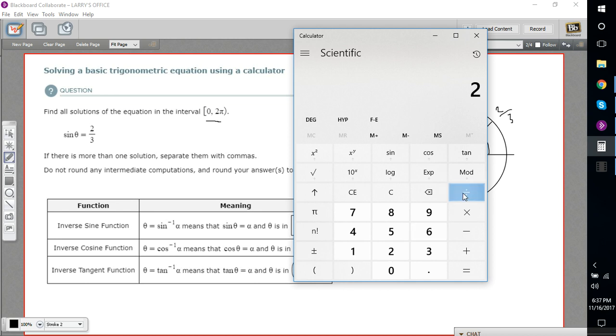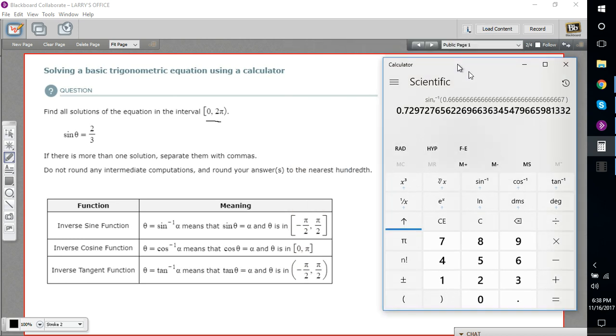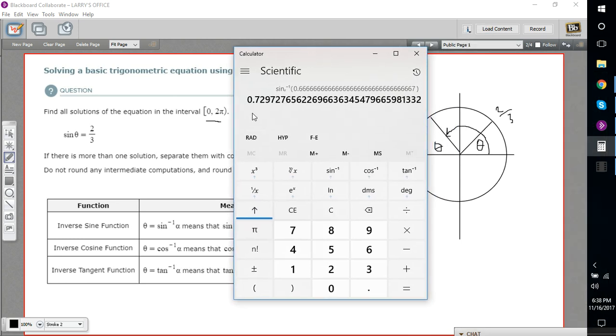I'll bring up the calculator here. So two divided by three. Before we take the inverse sine, we've got to be careful. We're working with radians here, not with degrees. So I'm going to flip it into radian mode. Then inverse sine on the Windows calculator, you press this up arrow, and the sine's got the little negative one above it. There is our inverse sine. We're supposed to go to the nearest hundredth, so we're going to call this 0.73.